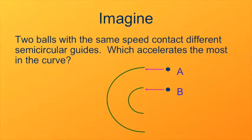To get a first idea of how this works, here we'll have two objects, A and B. We imagine them as uniformly rolling balls. They start off with the same speed, moving in the same direction, so they have the same initial velocity. They're going to contact these semi-circular guides. A contacts one that's got quite a larger radius than B. And as they are moving in that circle, the directions of their velocities are changing. So which one is going to be accelerating most in the curve?